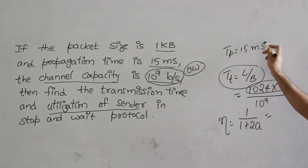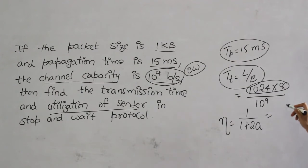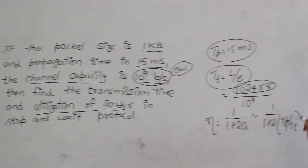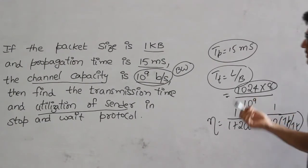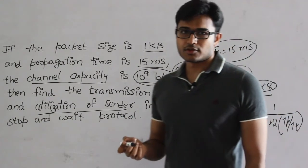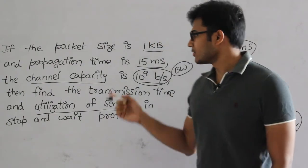So you can substitute all these values and you can get it. From this, you find out Tt and Tp is already given. Therefore, what is 1 upon 1 plus 2a? 1 upon 1 plus 2 into Tp by Tt. You can substitute it and get it. There is nothing in this. Just the value sort. The way they have given it is different.